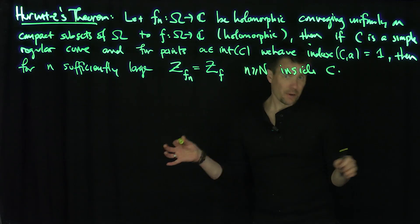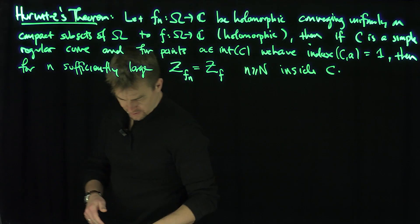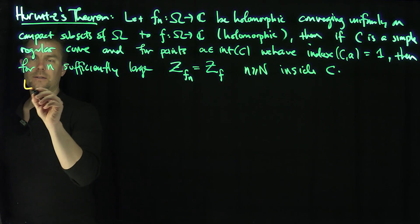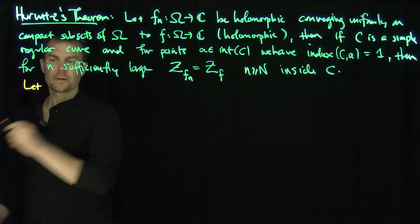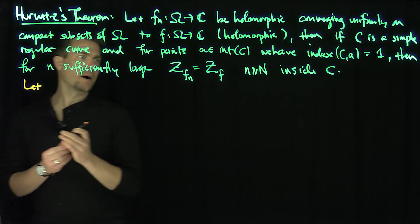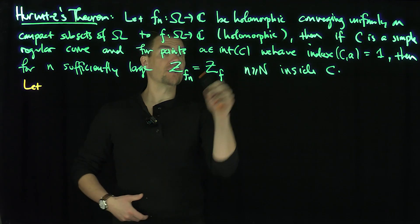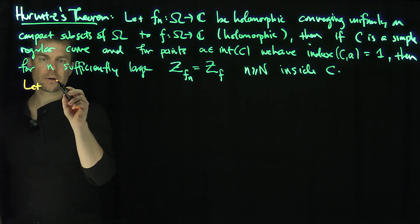In the proof of this, it takes longer to state the theorem than to prove it because to prove it we should use Rouché's theorem. So let's see, since C is a compact subset we can find, and I'm assuming that of course f does not vanish on C. So let C be a curve,